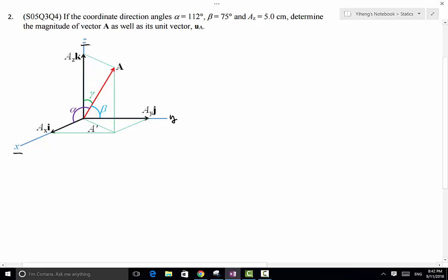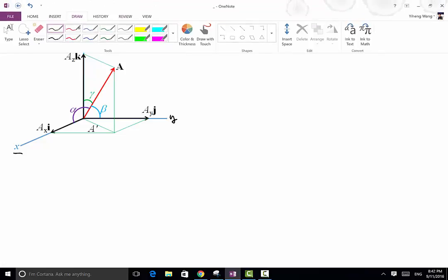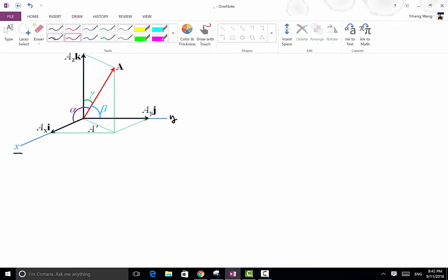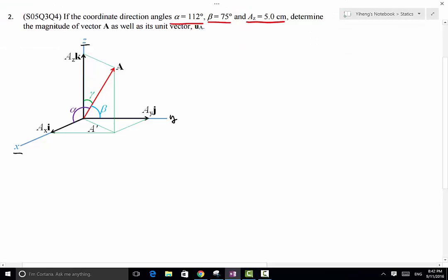Out of the three angles we know two of them. We know alpha is 112 degrees, beta is 75. We do not know what gamma is, but we do know the z component of this vector is 5.0 cm, and we need to determine the magnitude of vector A as well as its unit vector uₐ.